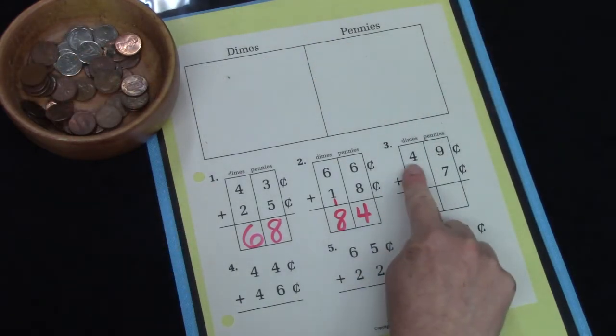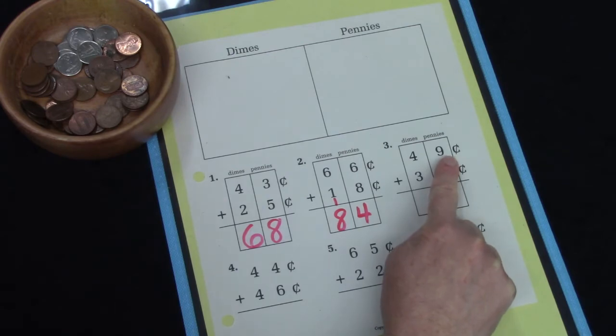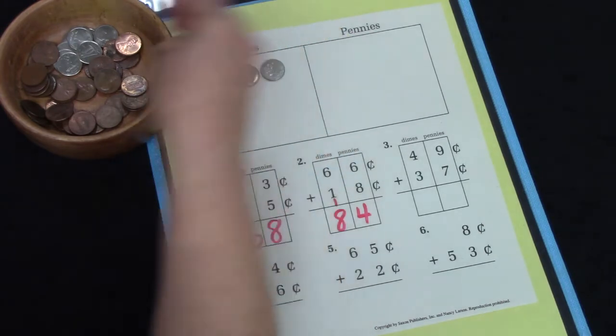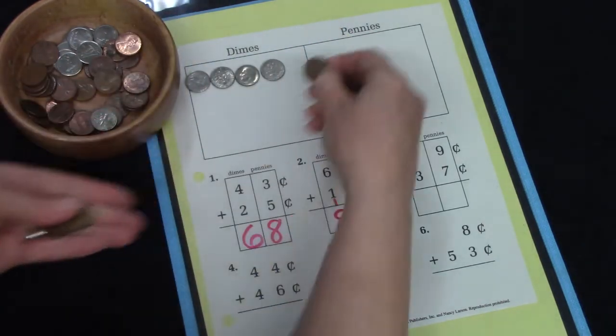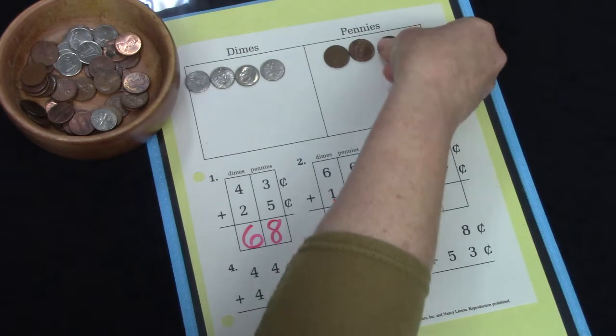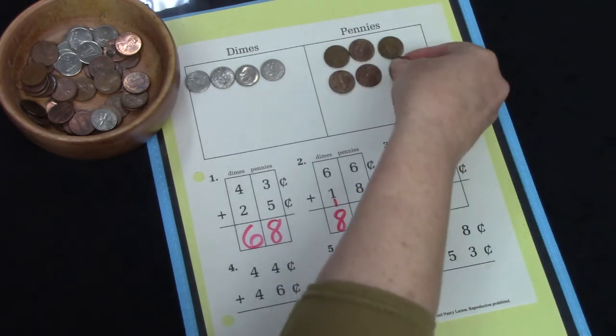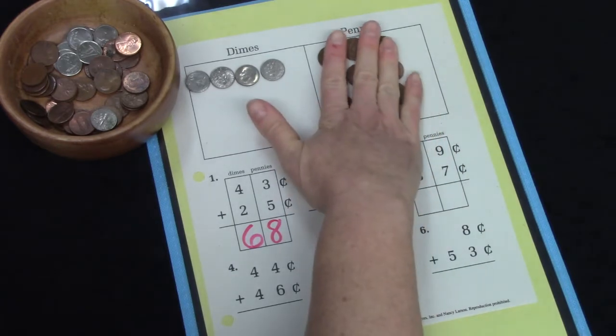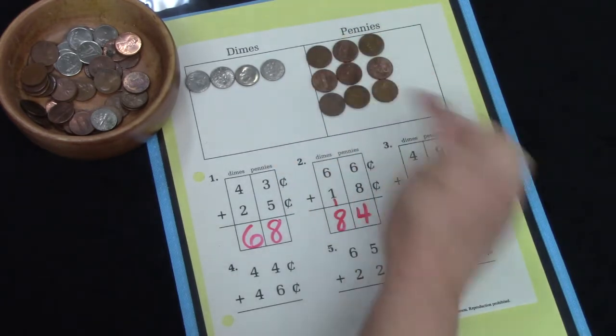Here we are going to put out 49 cents with dimes and pennies. And I would like for you to do that as well. 10, 20, 30, 40, 41, 42, 43, 44, 45, 46, 47, 48, 49. 9 is 3 groups of 3.